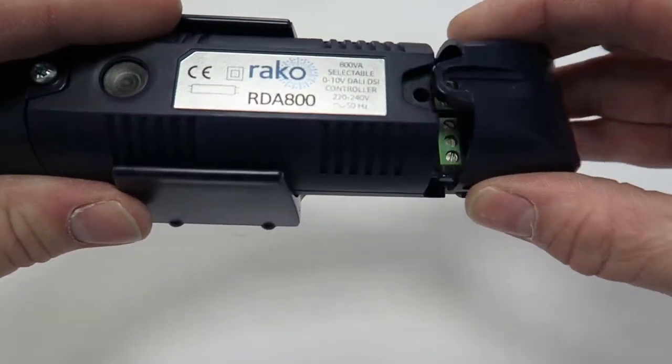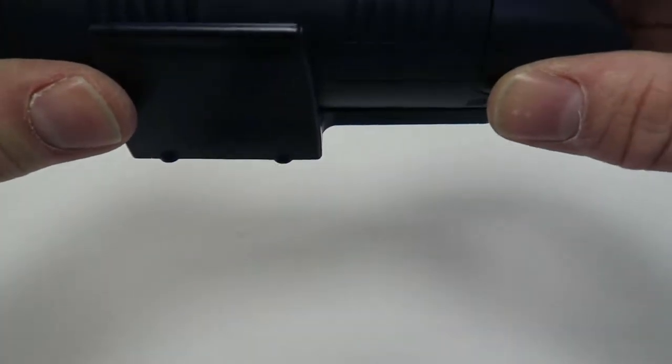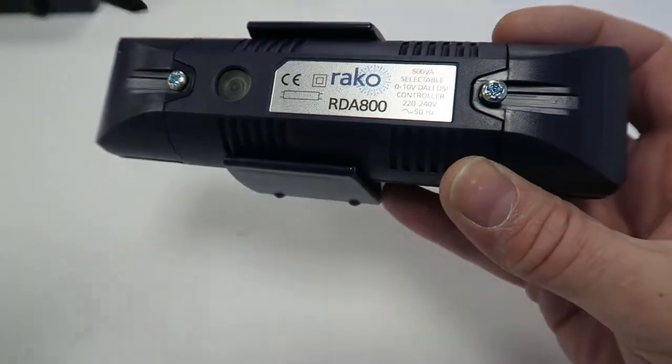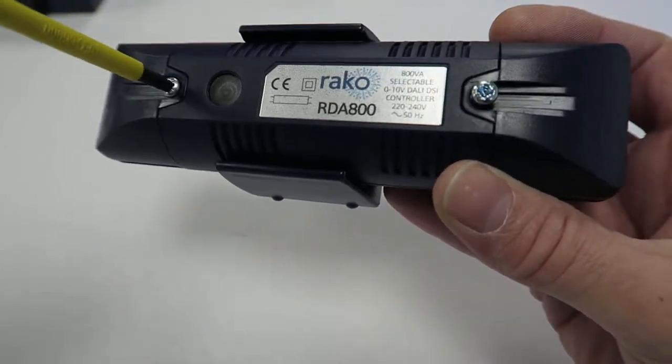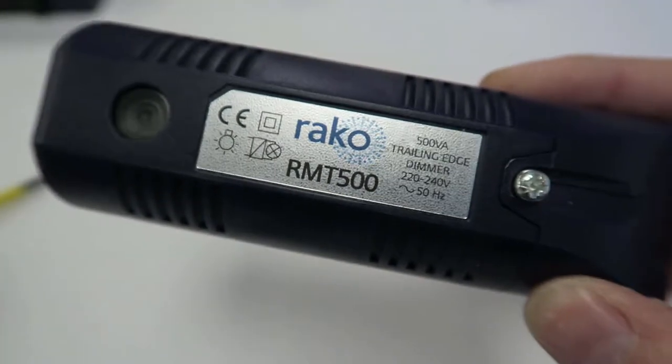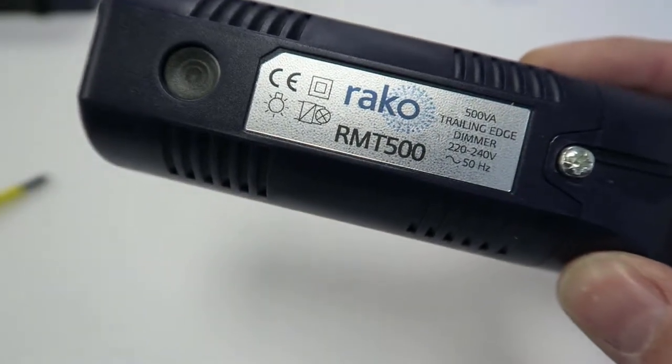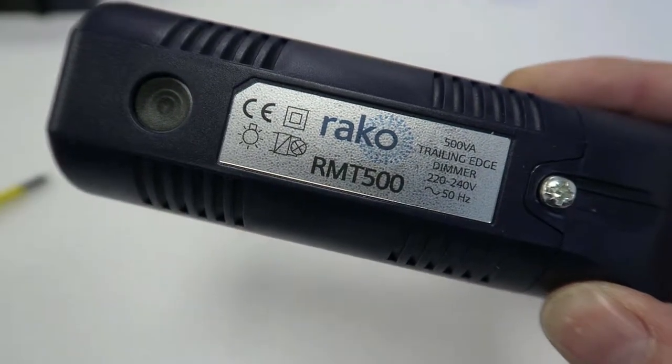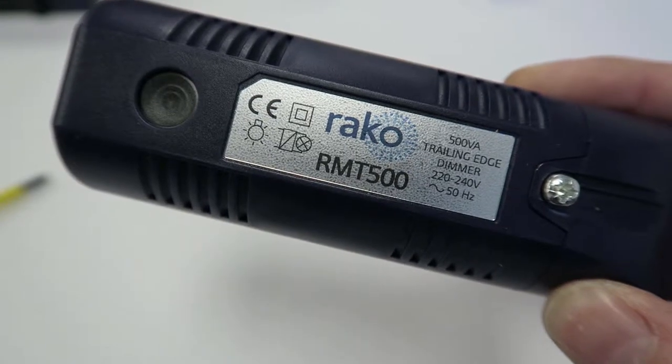Very often used in our business, because we prefer 0-10 or DALI dimming, as it's much more stable than phase dimming. But the RMT that we looked at a bit earlier, obviously an excellent device for 5-amp sockets in the home, wall lights, pendants, those sort of devices, that have generally a nice warm incandescent lamp in them.